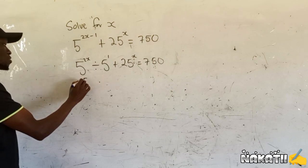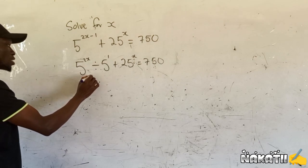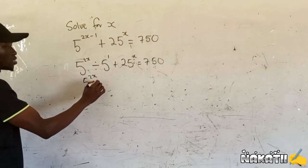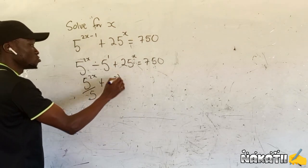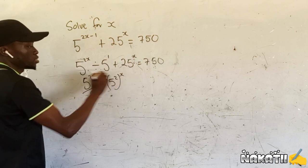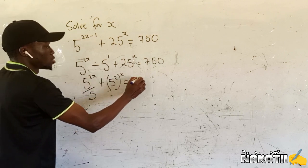Hence, this one can be written as 5^x divided by 5. Then this one can be plus, this one also can be written as 5^x equals 750.